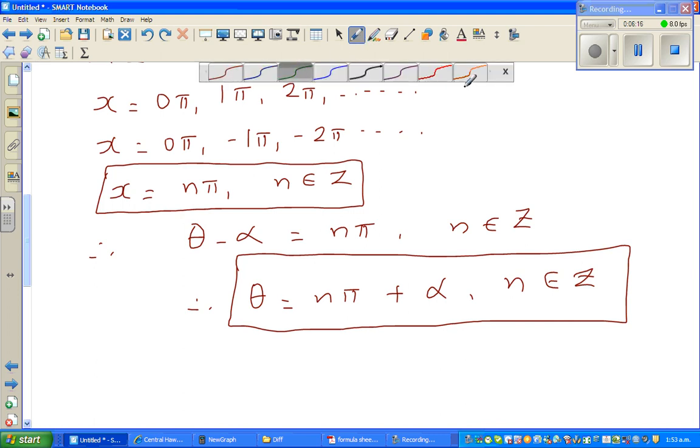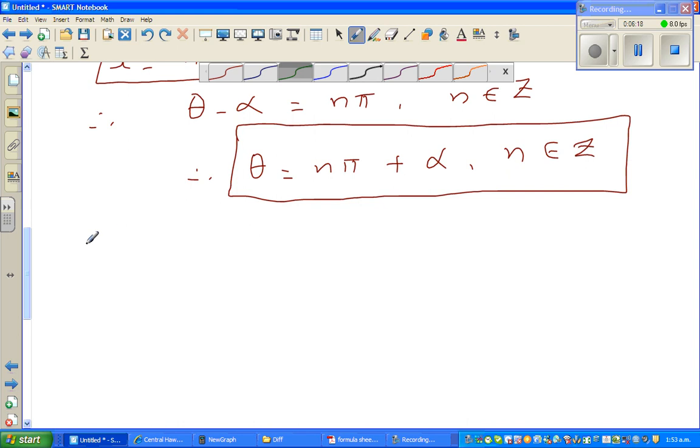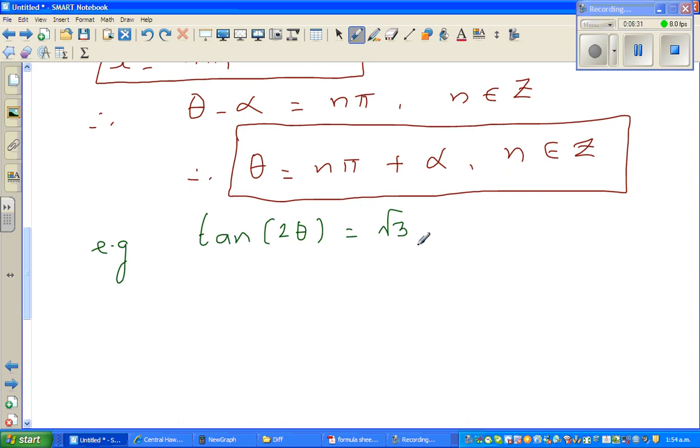So let's take an example to illustrate how can we use this in real life or in examples. So if you've got an example like this, say, tan 2θ is equal to, say, root 3. Now root 3, you should know that tan 60 is—so tan 60 is π/3. I should not write 60, we are talking in radians. So tan π/3 is, say, root 3.